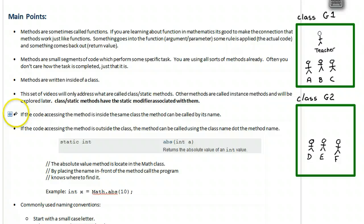If the code accessing the method is inside the same class the method can be called by its name. If the code accessing the method is outside the class the method can be called using the class name dot the method name. So this is where my fun little picture comes in. So I'm a teacher and imagine I was the main method so there's some code running here. If I needed student A, student B, or student C to do something I'm in the same classroom as them. So I would just say student A, student B, student C and they would go and do what needs to be done possibly returning something to me.